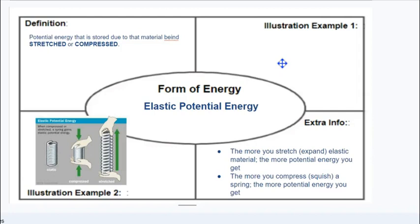Extra information: the more you stretch or expand elastic material, the more potential energy you get. The more you compress or squish a spring, the more potential energy you may get out of that object. Please hit pause now and fill out your Frayer model note.